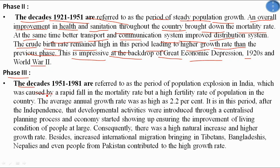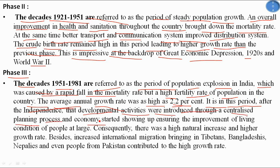Phase 3, between 1951 and 1981, is referred to as the period of population explosion in India, caused by a rapid fall in mortality rate but a persistently high fertility rate. The average annual growth rate was as high as 2.2%. After independence, development activities introduced through centralized planning improved living conditions. Increased international migration — Tibetans, Bangladeshis, Nepalis, and people from Pakistan — also contributed to the high growth rate.